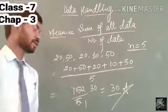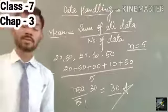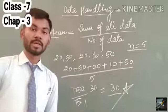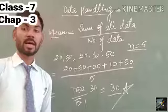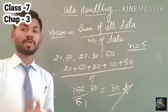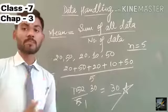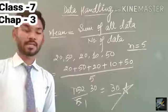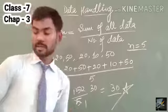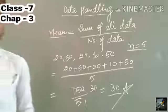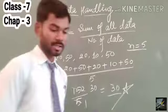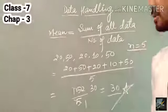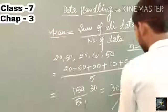Therefore 30 is the exact and required mean of the given data. I hope it is clear how we find out the mean of the given data. Now let us see one more question, and after that we shall look at median.